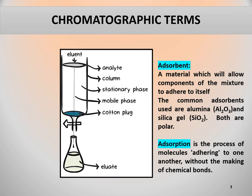Mobile phase: it's also called carrier; it's basically a solvent moving through the column. Eluent is the fluid entering the column, and eluate is the fluid leaving the column that is collected in a flask. Adsorption is the process of adhering of molecules to one another without the making of chemical bonds. And elution is the process of washing out a compound through a column using a suitable solvent.